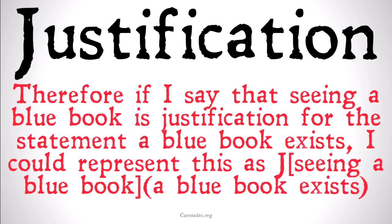For example, if I say that seeing a blue book is justification for the statement 'a blue book exists,' I could represent this as J(seeing a blue book, a blue book exists). Basically, the first thing is justification for the second.